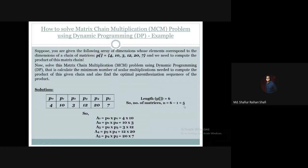Matrix 1 has dimension P0 × P1, that is 4×10. Matrix 2 has dimension P1 × P2, that is 10×3. Matrix 3 has dimension P2 × P3, that is 3×12. Matrix 4 has dimension P3 × P4, that is 12×20. And Matrix 5 has dimension P4 × P5, which is 20×7.